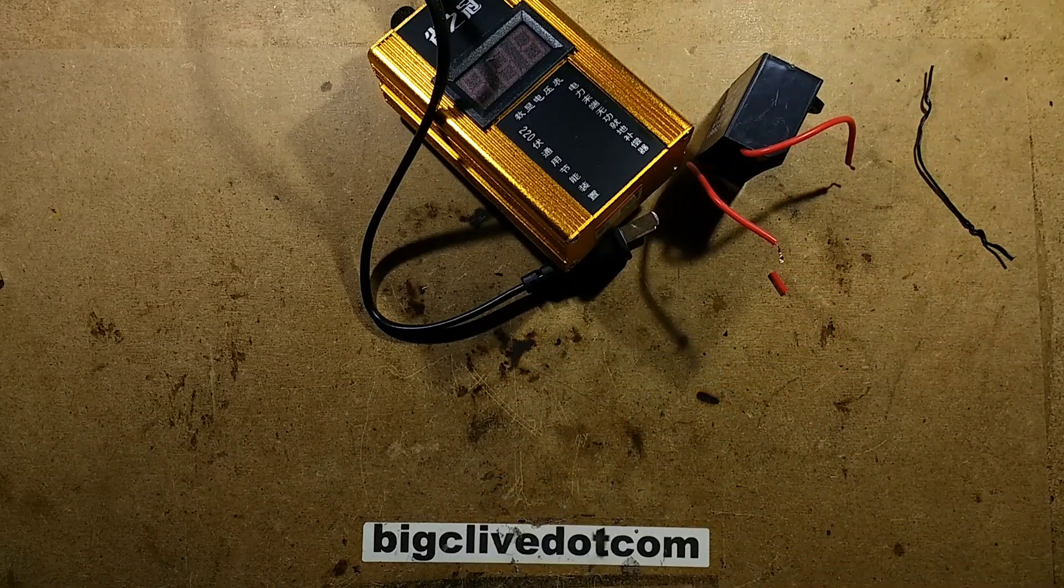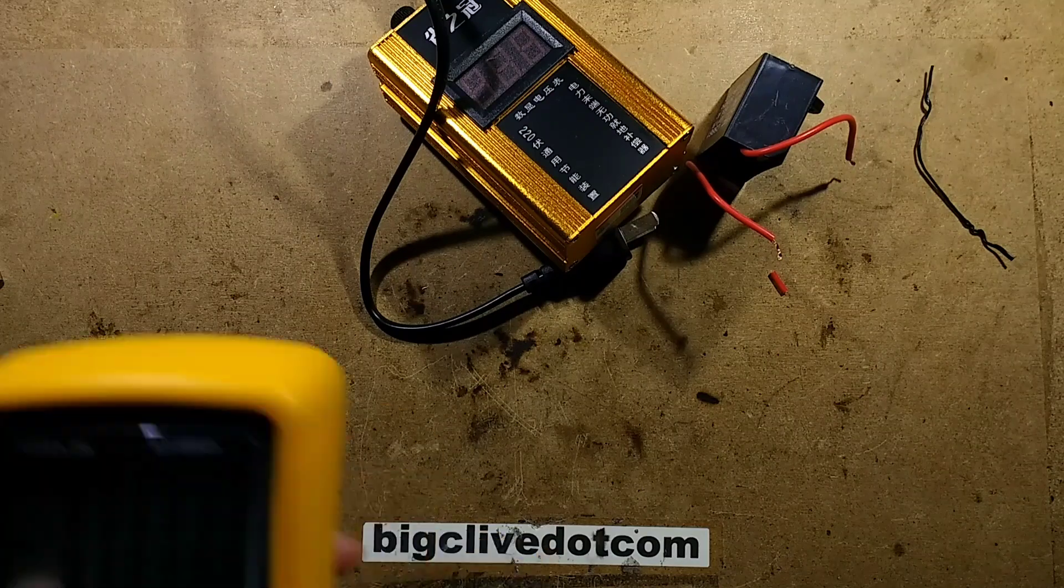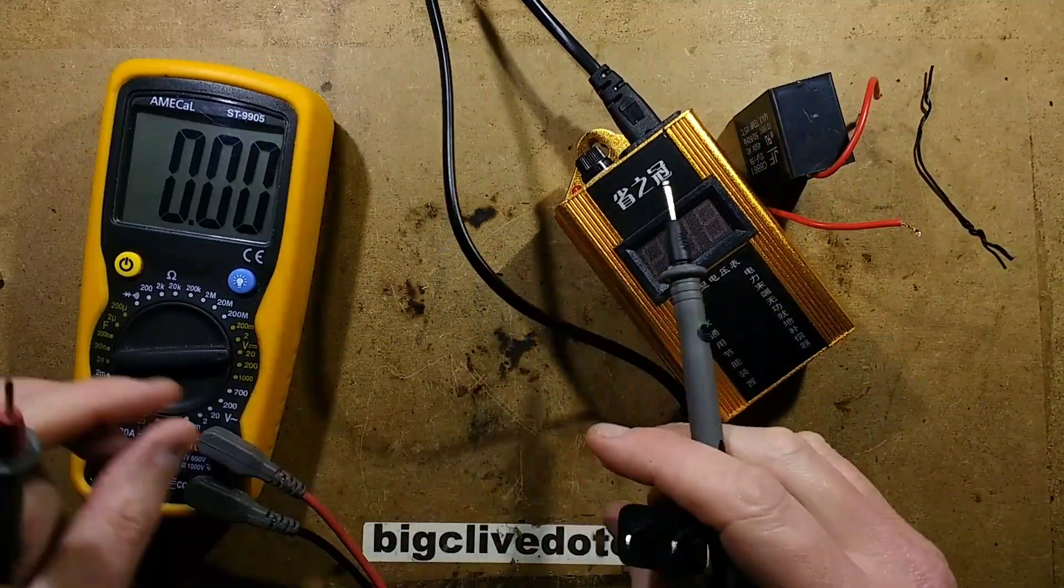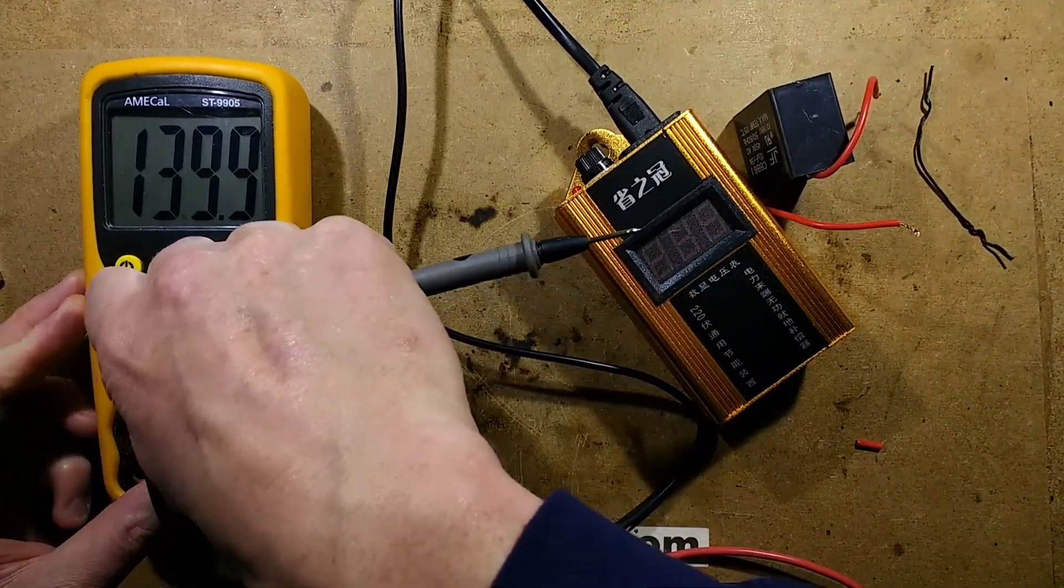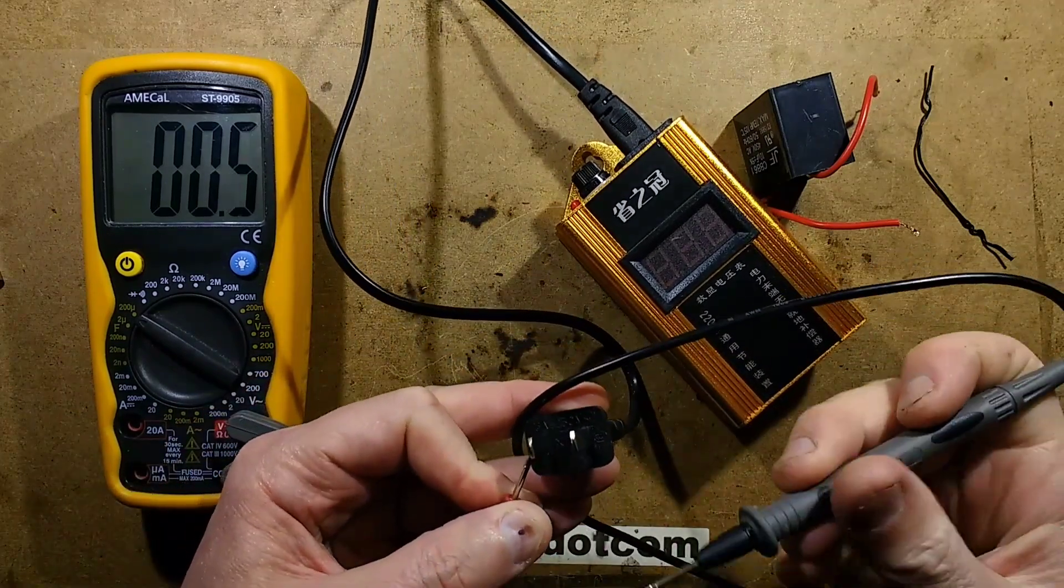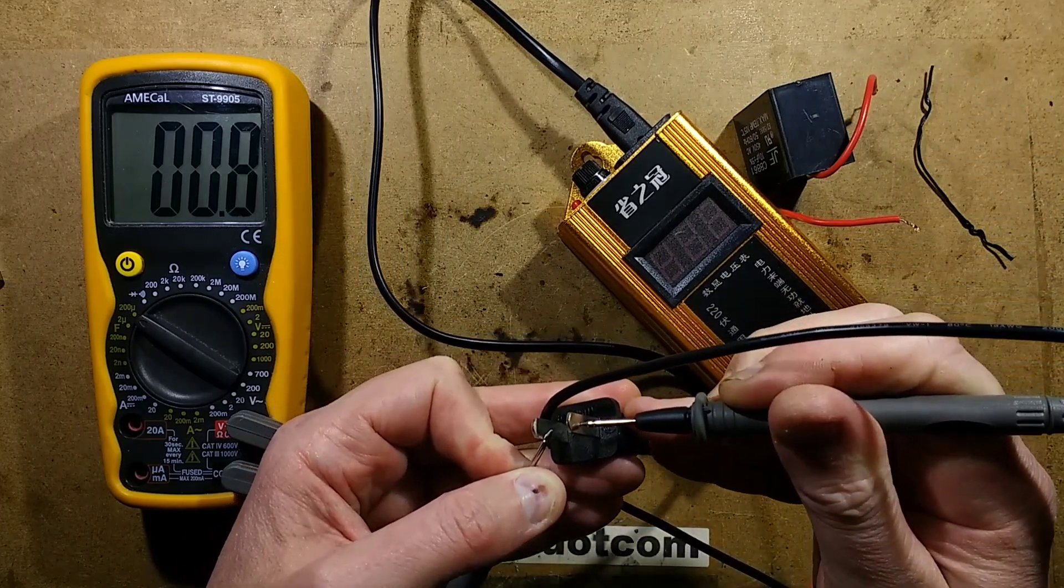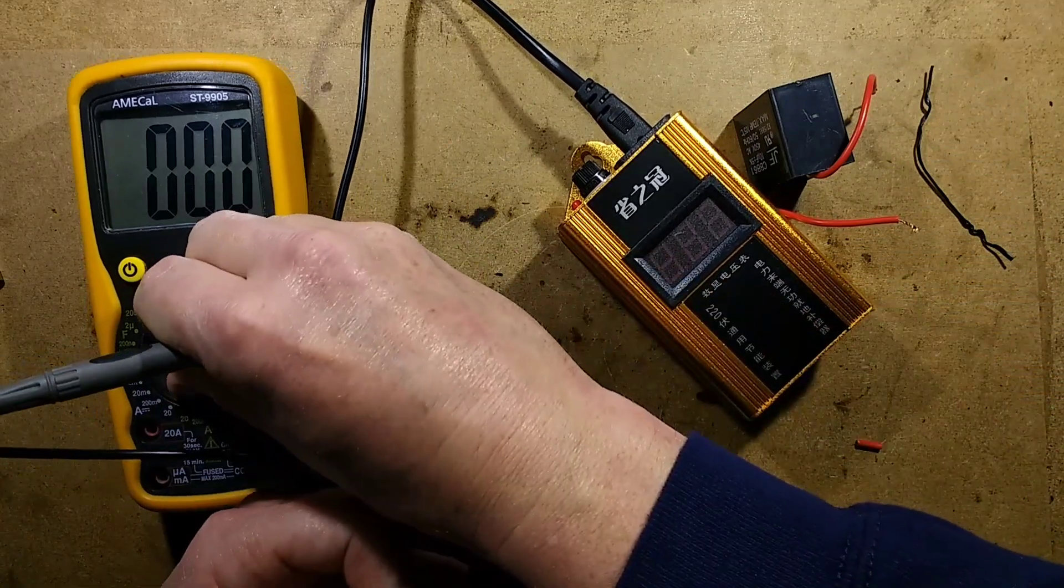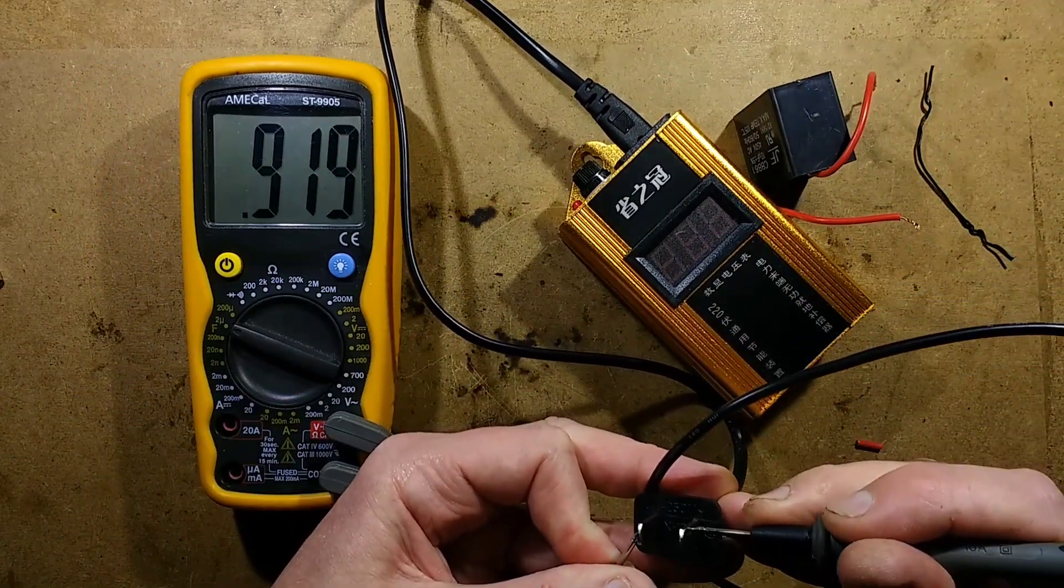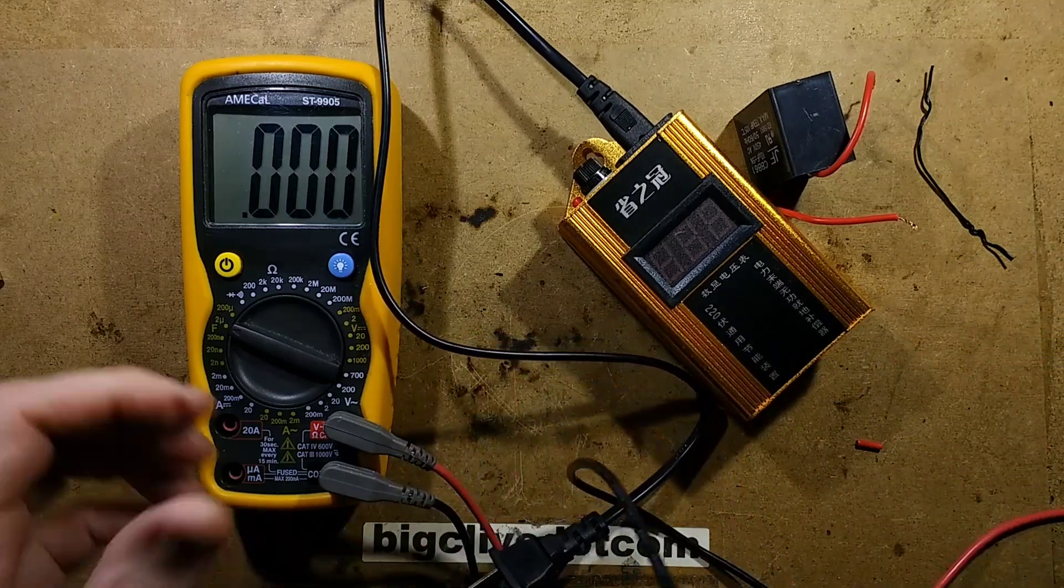Let's just out of interest measure across that with the capacitive range and see what it actually comes up with. So let's be optimistic and say 200 microfarad, which I'm not really thinking it's going to be anywhere near that. Oh, it's not anywhere near that. Oh, dear. Let's be somewhat less optimistic. One microfarad. Okay, I think it's time to open this.